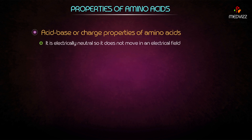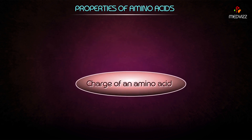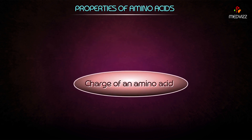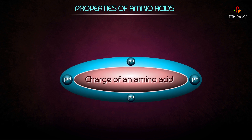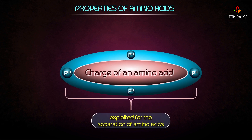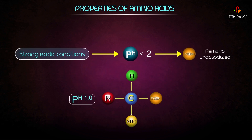The zwitterion is electrically neutral and does not move in an electrical field. The other two forms are anionic and cationic. The charge of an amino acid always depends on the pH of its surroundings — it is altered by changing the pH. This property is exploited for the separation of amino acids. In strongly acidic conditions, the –COOH group remains undissociated.